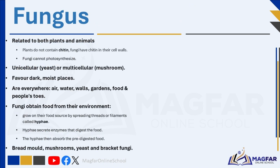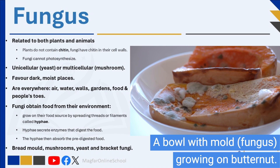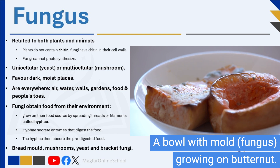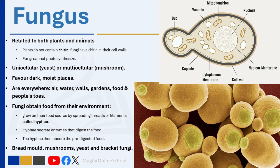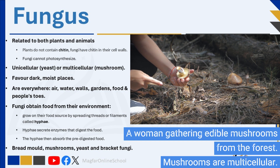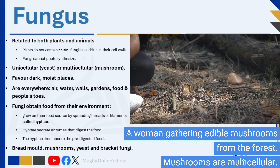Fungi are living organisms related to both plants and animals but different from these groups. One big difference between plants and fungi is the substance that forms the cell walls of fungi — namely chitin. Fungi may be unicellular, such as yeast used for baking bread, or multicellular, such as mushrooms and toadstools. Fungi have characteristics of plants but do not contain chlorophyll and cannot photosynthesize. They tend to grow in dark, moist places and are found everywhere — in the air, water, on walls, in gardens, on food, and sometimes between people's toes.